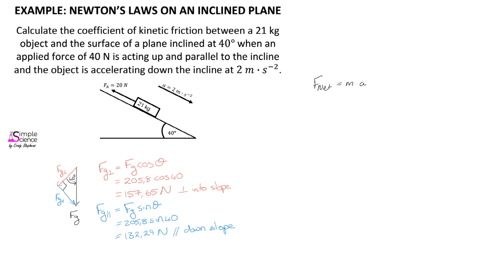It is always advisable to start a question like this by drawing a free body diagram where we indicate the forces acting on the object. There is a force of gravity acting vertically downwards, a normal force because the object is on a surface, and an applied force attempting to pull the object up the slope. There is also a frictional force — friction always opposes motion, and since the motion is down the slope, friction acts up the slope.